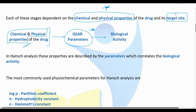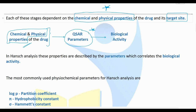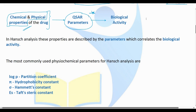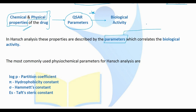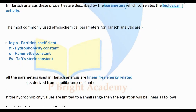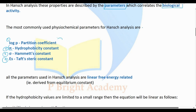We have discussed the parameters. Hansch analysis uses three parameters to study and correlate with biological activity. These parameters are: log P (the partition coefficient), the hydrophobicity constant pi, Hammett's constant sigma, and Es - Taft's steric constant. These four parameters are used in Hansch analysis.